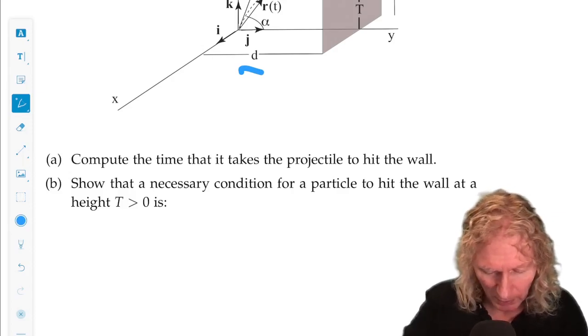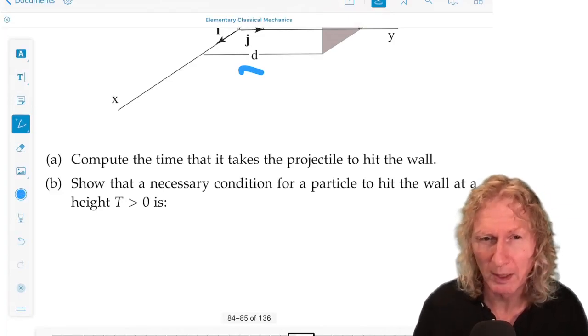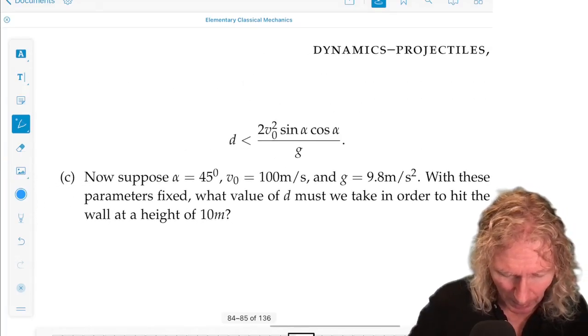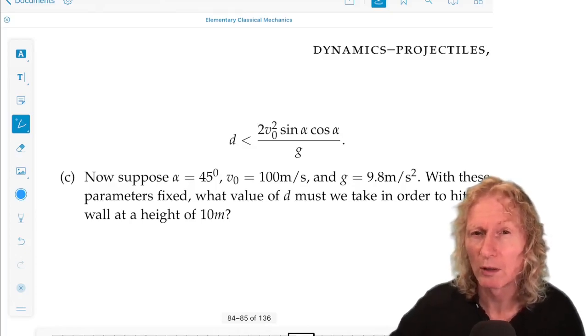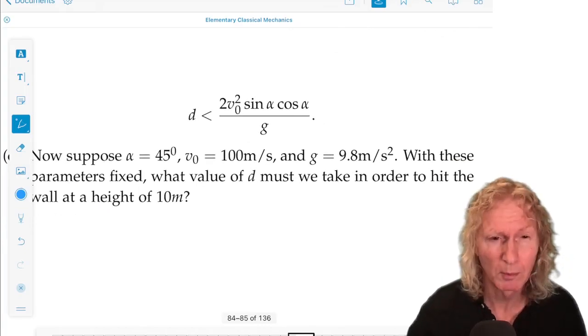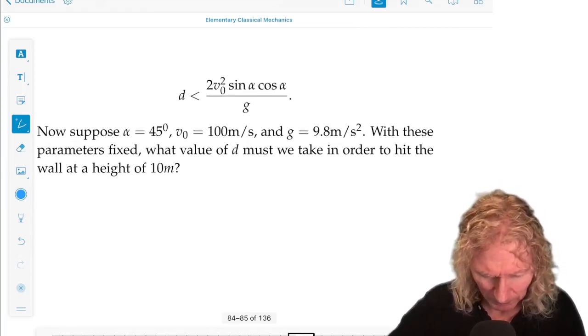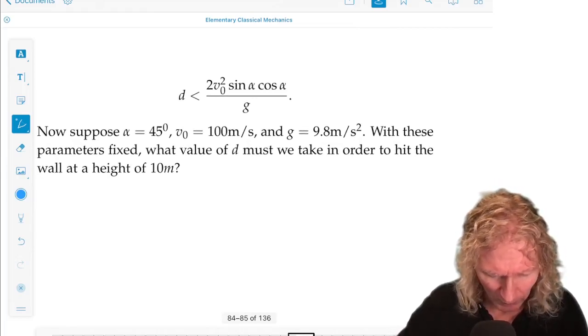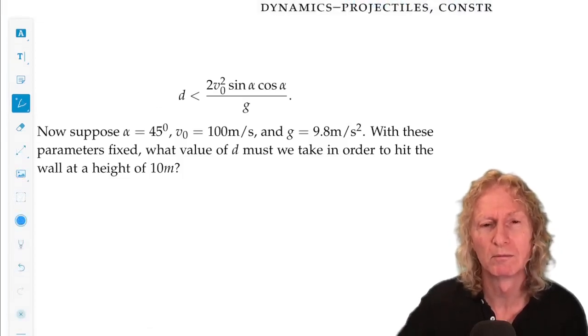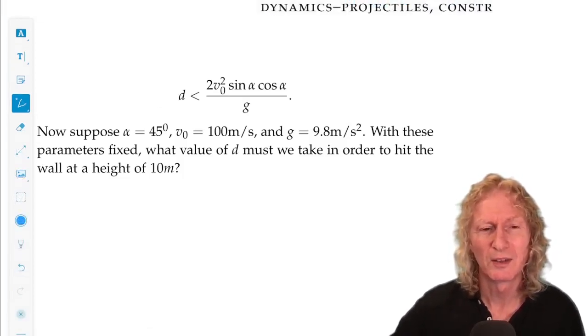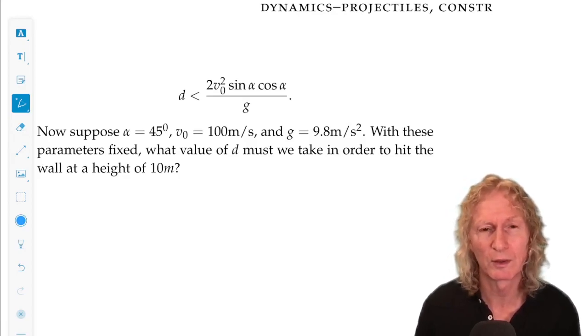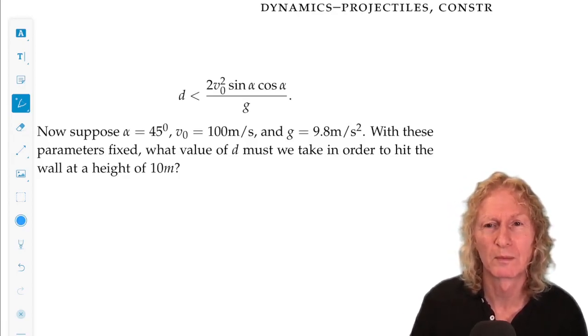Show that a necessary condition for a particle to hit the wall at a specific height, uppercase T, would be for d to be smaller than this particular value. And then I want you to take some numbers. We don't do that very often in this course. And with these numbers fixed, find the value of d so it hits 10 meters above. So these problems will really make you think about how you use the expressions for velocity as a function of time and position as a function of time.